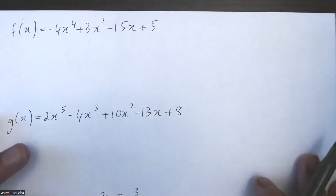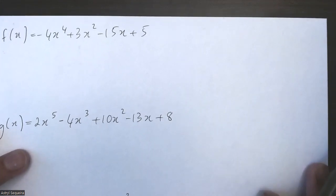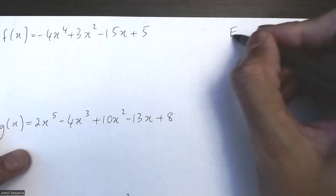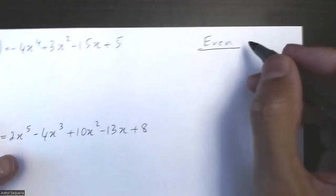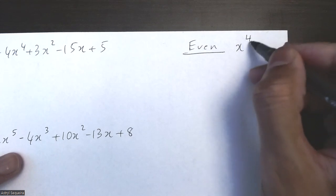So before we start the questions, let me quickly explain the maximum and minimum number of zeros. Let's start with even functions. I'm going to pick a function like x to the power of 4 to begin with.